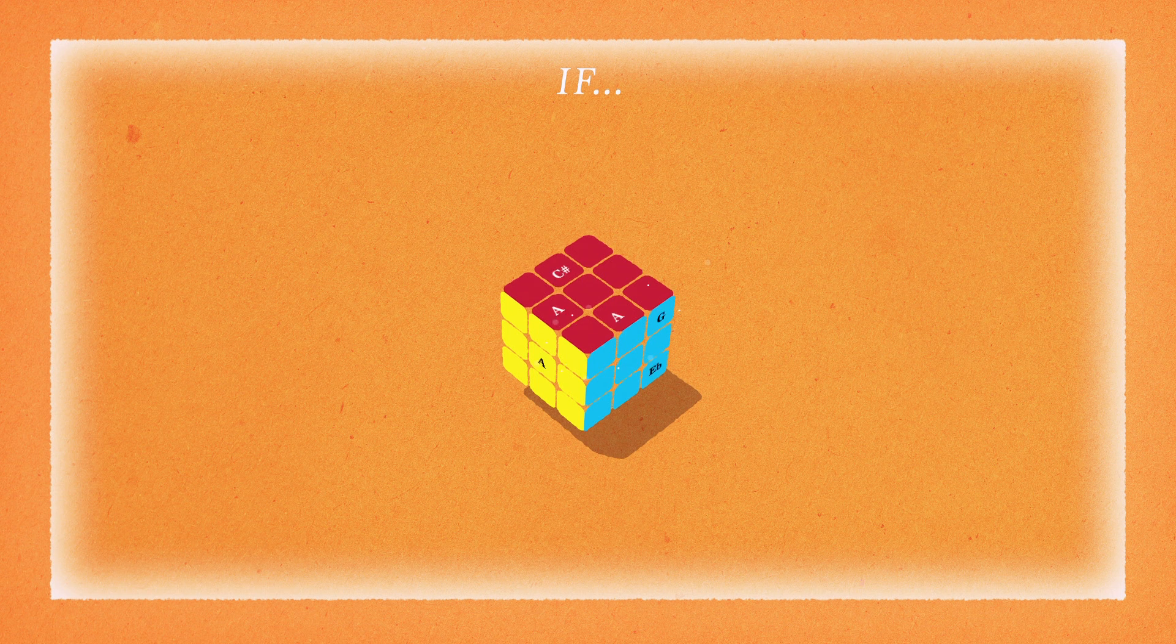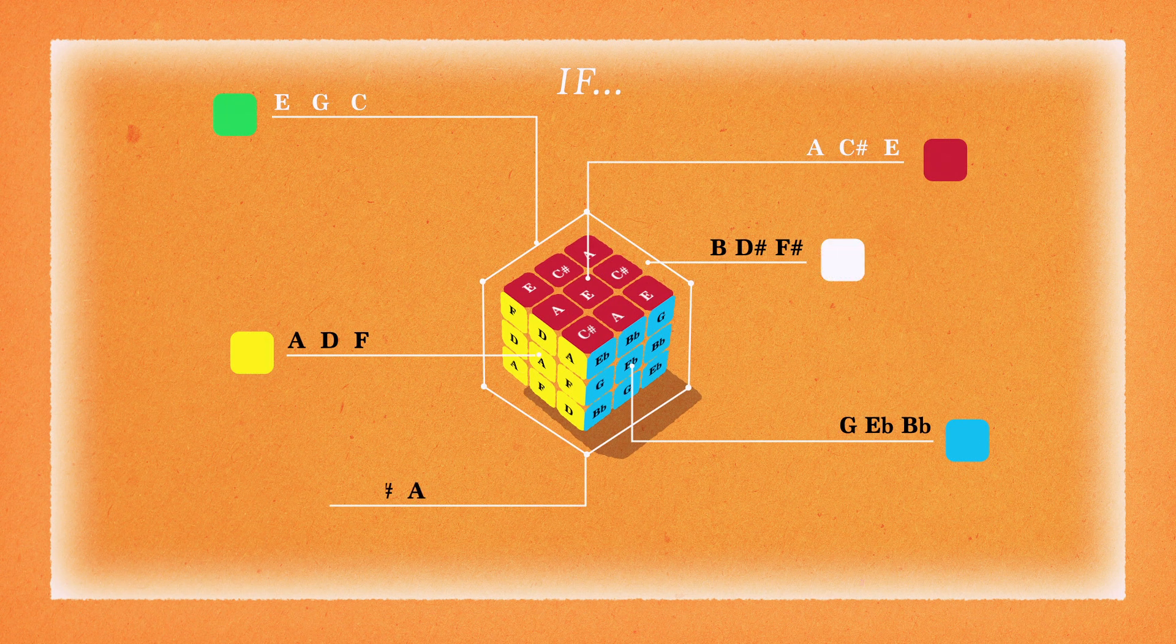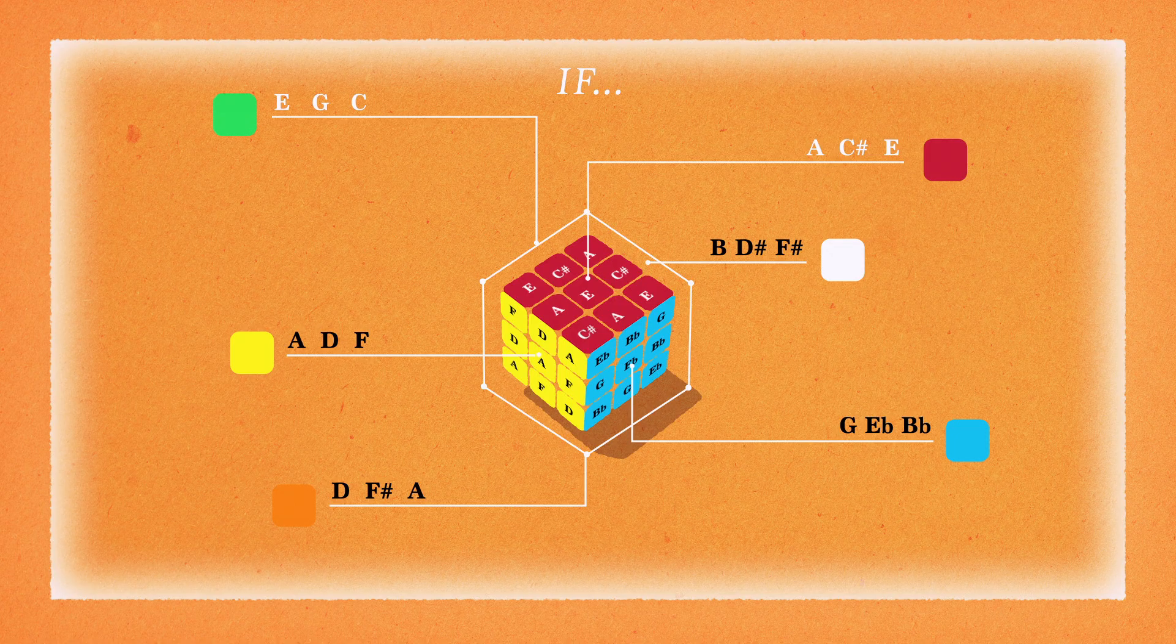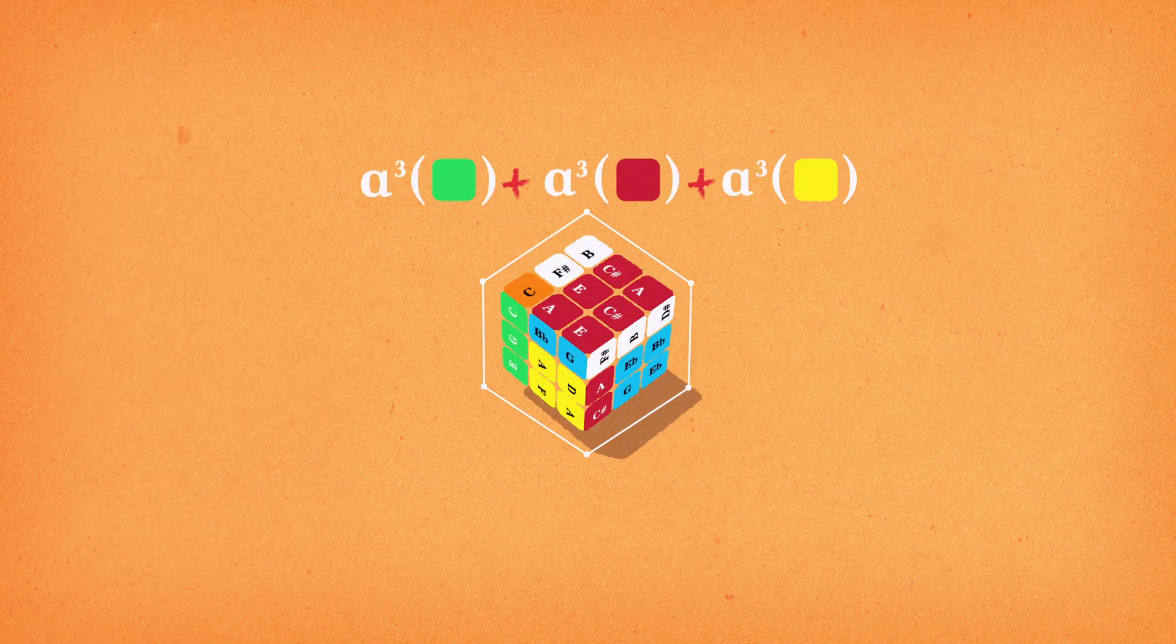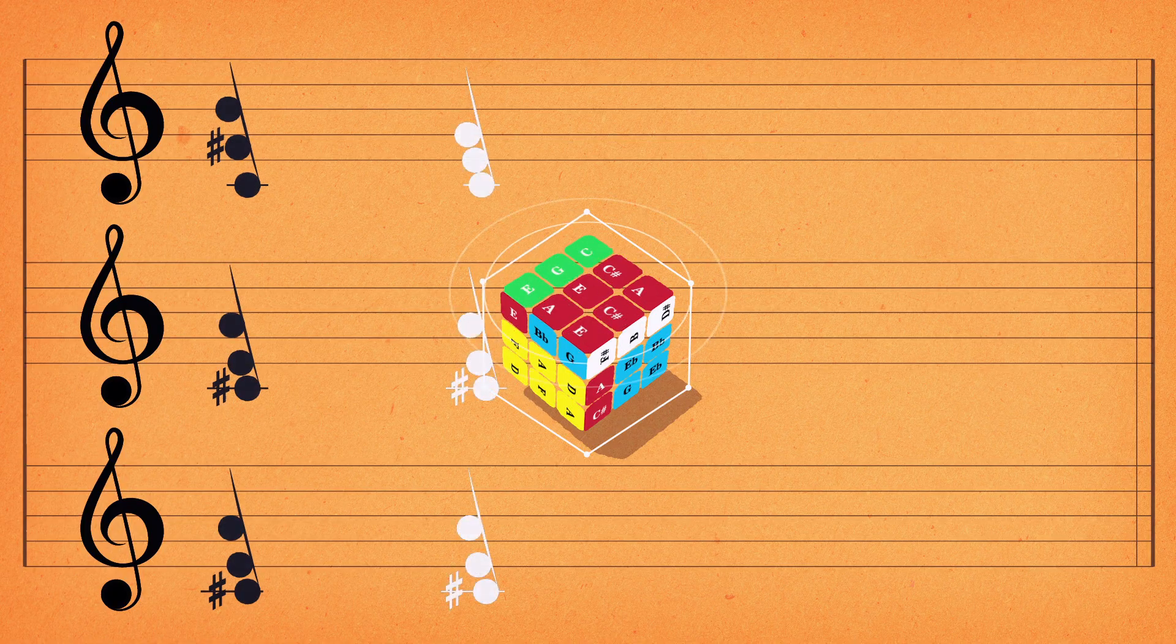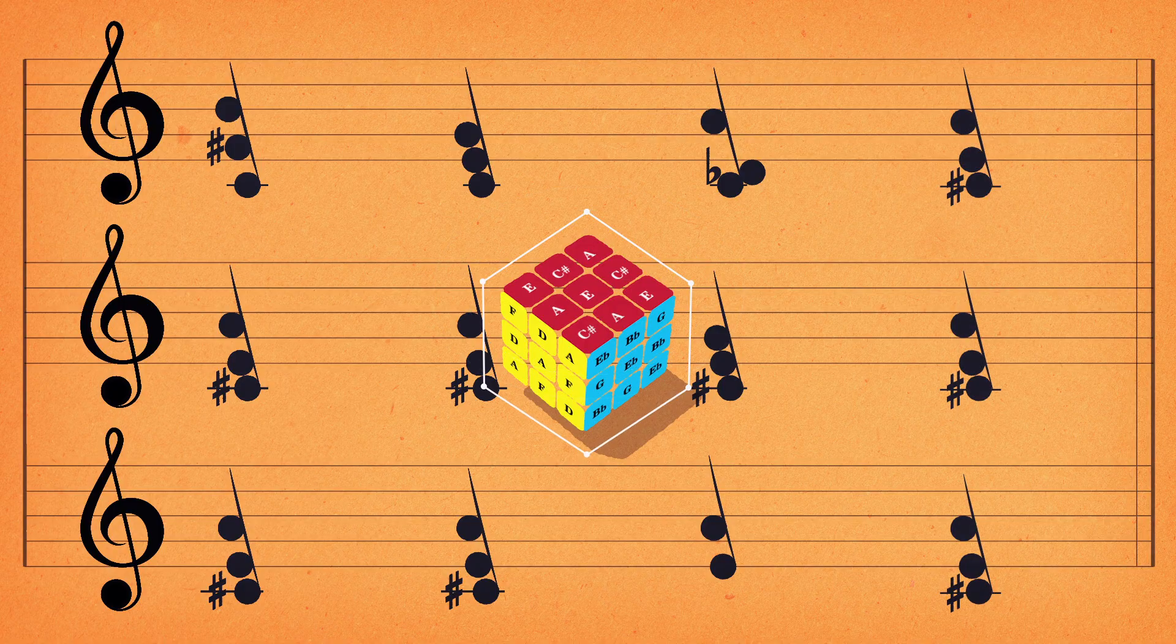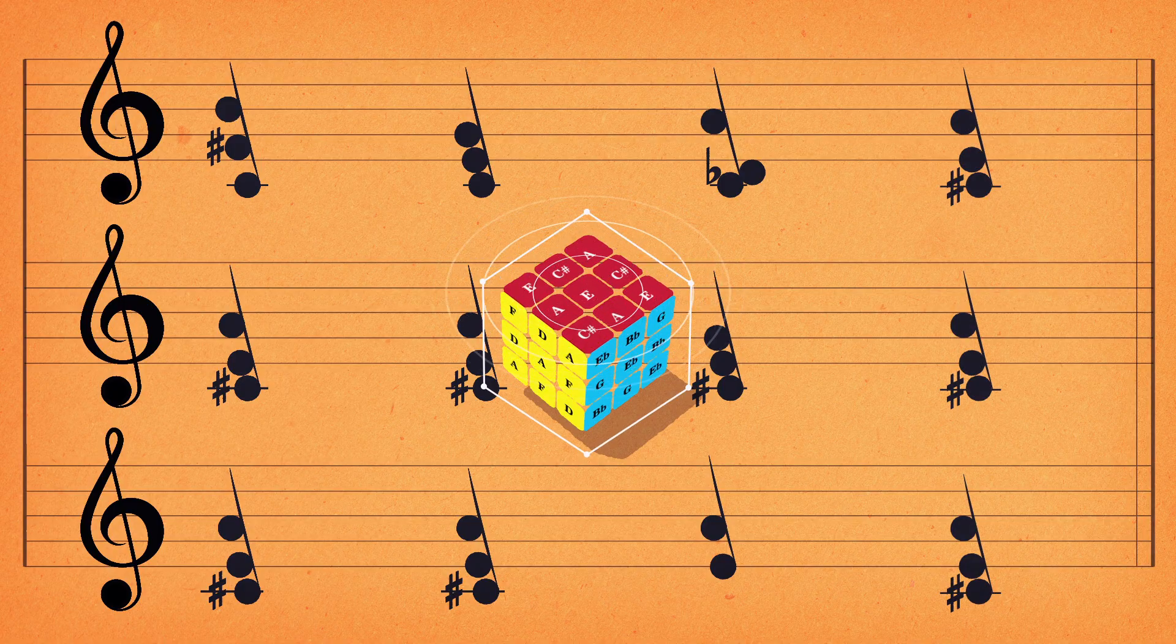So, if you were to cover your entire Rubik's Cube with notes such that every face of the solved cube is a harmonious chord, you could express the solution as a chord progression that gradually moves from discordance to harmony. And play the Rubik's Cube, if that's your thing.